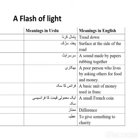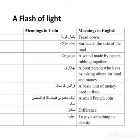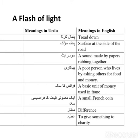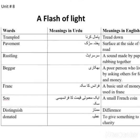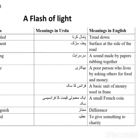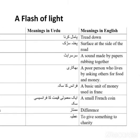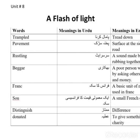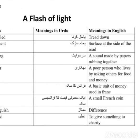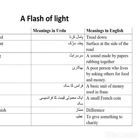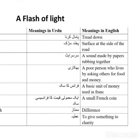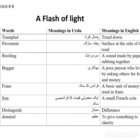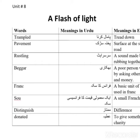Beggar — bhikari — a poor person who lives by asking others for food and money. Frank — France ka sikha — a basic unit of money used in France. Ek mamuli kimat ka fransi si sikha — a small French coin.